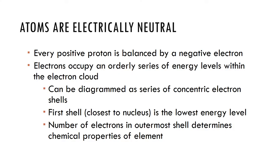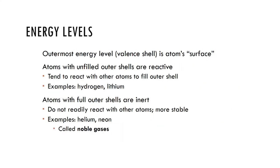Atoms are electrically neutral — positive protons are balanced by negative electrons. Electrons occupy different energy levels within the electron cloud. The first shell is closest to the nucleus and has the lowest energy level. The number of electrons in the outermost shell is characteristic of the chemical properties of that element. The outermost energy level is called the valence shell, and atoms with unfilled outer shells are reactive. Electrons generally are found in pairs.